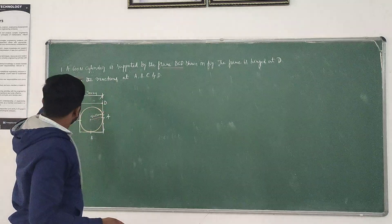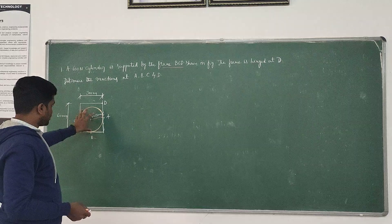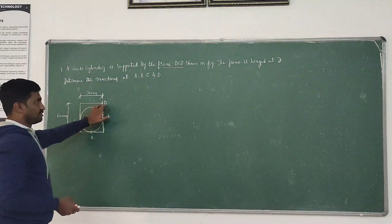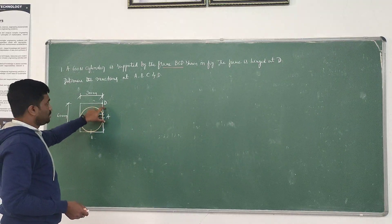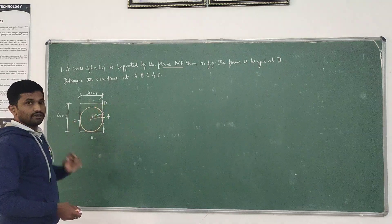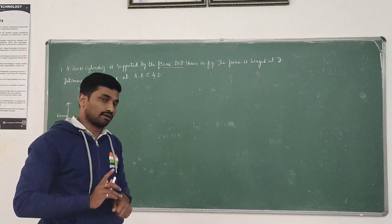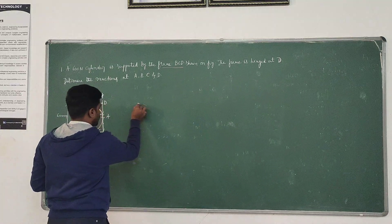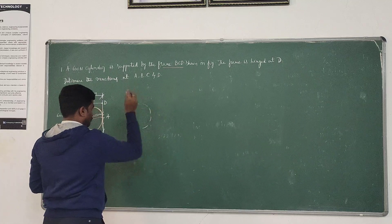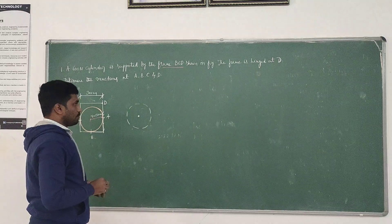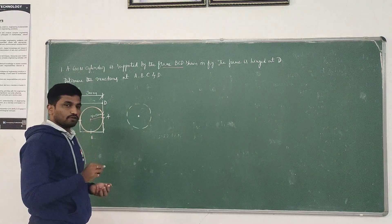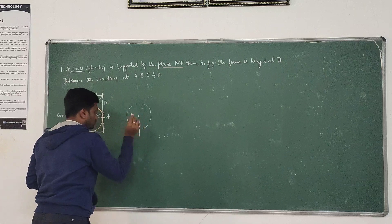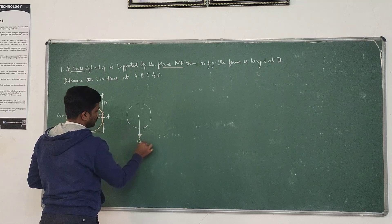So in this given problem, it is a 600-newton cylinder inscribed in the frame. The cylindrical weight is 600 newton and it is inscribed in the frame BCD. The frame is hinged at D. We are having two components: one is the cylinder, another one is the frame. We have to write the free body diagram for both components. First, I am going to write the free body diagram for the cylinder. The self-weight of the cylinder acting towards gravity is 600 newton.